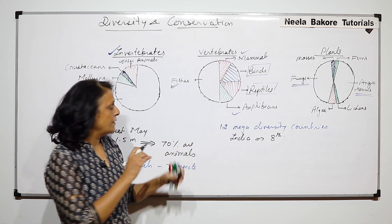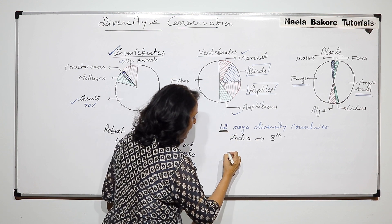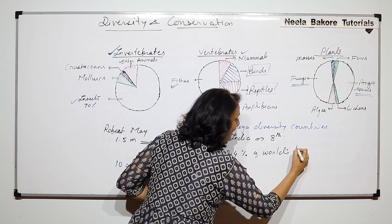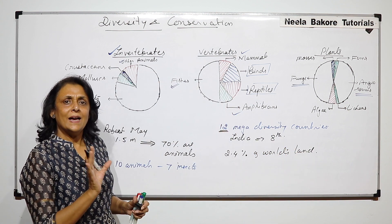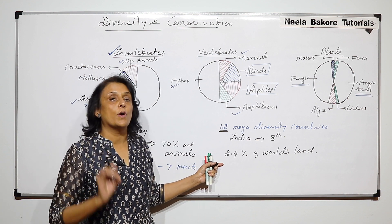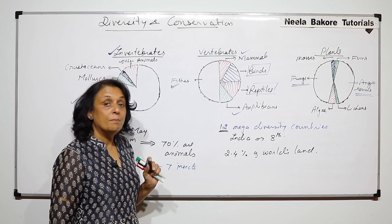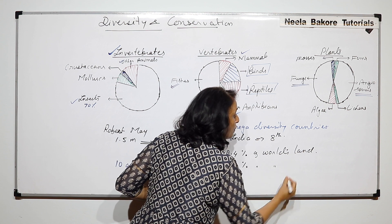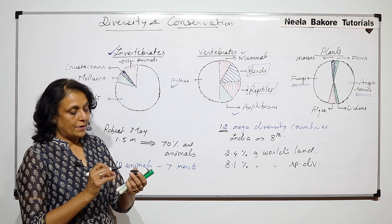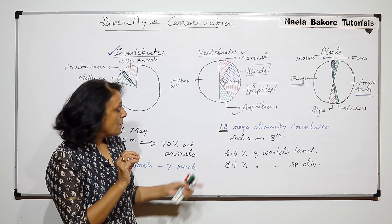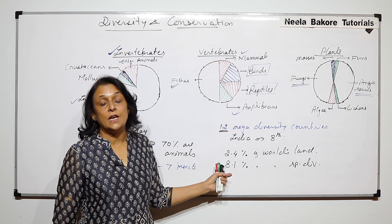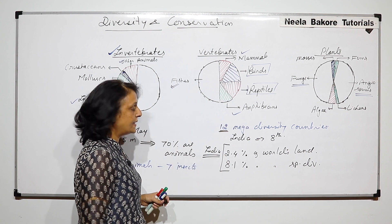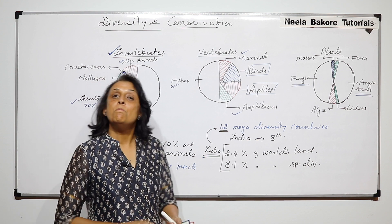We are one out of those 12 mega diversity countries. The reason is India contributes about 2.4% of world's land area. So our contribution is just 2.4% in the land part. But when it comes to diversity contribution, it is 8.1% of the world's species diversity. So our contribution of land in the world is less, but in that less land, the species diversity is much higher. And that is why we are one of the 12 mega diversity countries.